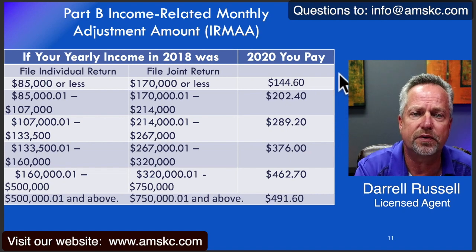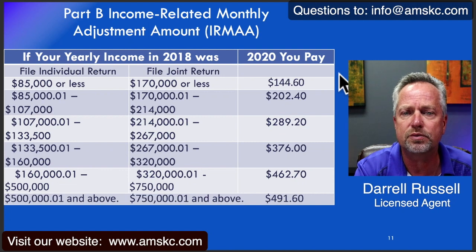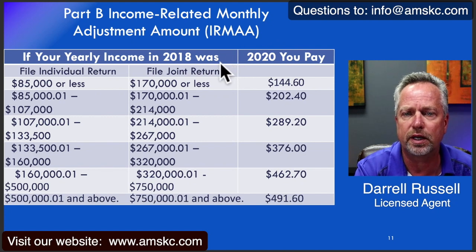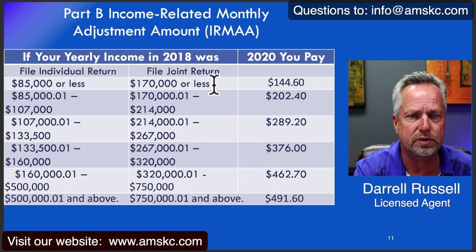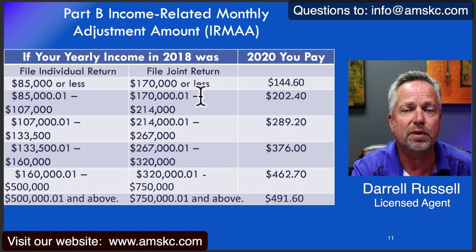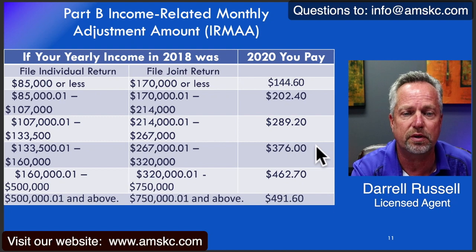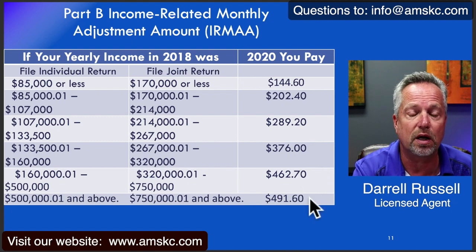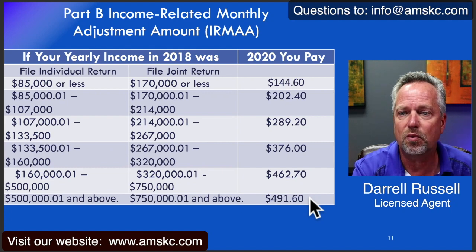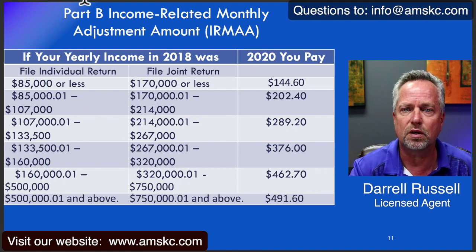We talked in a previous video about Part A and B premiums. Here we're looking at the IRMAA amounts. So if your 2018 tax return shows you filing jointly, if you're under $170,000 no problem — you pay the standard premium. But if you're one penny above, you can see there are four different additional brackets. You can pay as much as $202, $289, $376, or yes, as much as almost $500 a month for Part B instead of the standard $144. For more information on IRMAAs, go to our website at amskc.com.